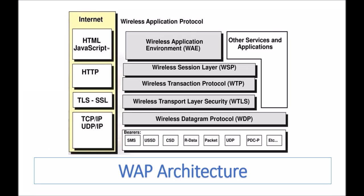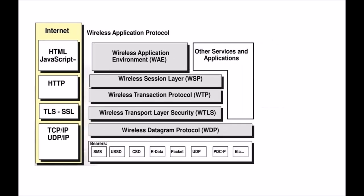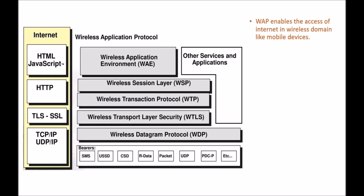Hello everyone, my name is Ankita Verma and today we will discuss WAP architecture. WAP architecture is also called WAP protocol stack. WAP enables the access of internet in wireless domain like mobile devices. Basically, WAP provides the internet connectivity to the mobile phones.